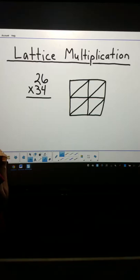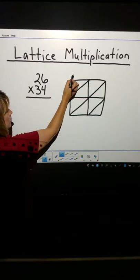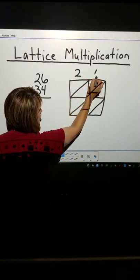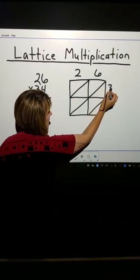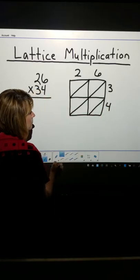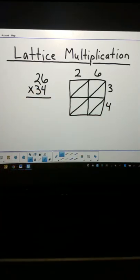This will be my grid. Now, I'm going to take 26 and put it atop like this, 2 and 6. 34, I'm going to go down the right-hand side, 3 and 4. Now, I'm all set, ready to multiply.